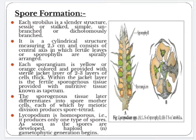Each strobilus is a slender structure, sessile or stalked, simple, unbranched or dichotomously branched, arising at the apex of the stem or branches. It is a cylindrical structure measuring about 2.5 cm and consists of a central axis on which sporophylls or spore-bearing leaves are spirally arranged. Each sporophyll bears a solitary sporangium on the upper side at the basal portion. Each sporangium is yellow or orange colored and provided with a jacket layer of 2 to 3 cell layers in thickness.